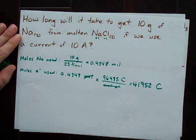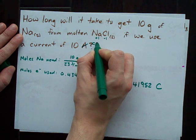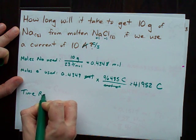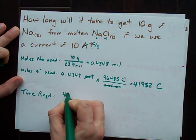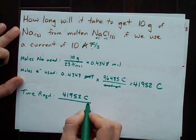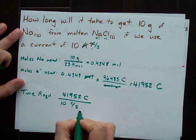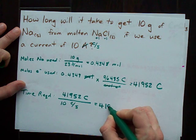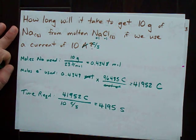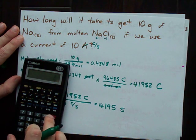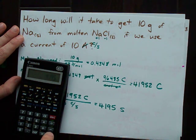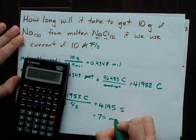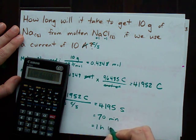And finally, we need to remember that an amp really just means a coulomb per second. Which means that the time required is the number of coulombs we need divided by the rate at which we pump them in. Coulombs cancels with coulombs leaves us with seconds. And we're left with 41,952 seconds. It's quite a bit of time. 41,952 seconds is 70 minutes, which is really just one hour and 10 minutes.